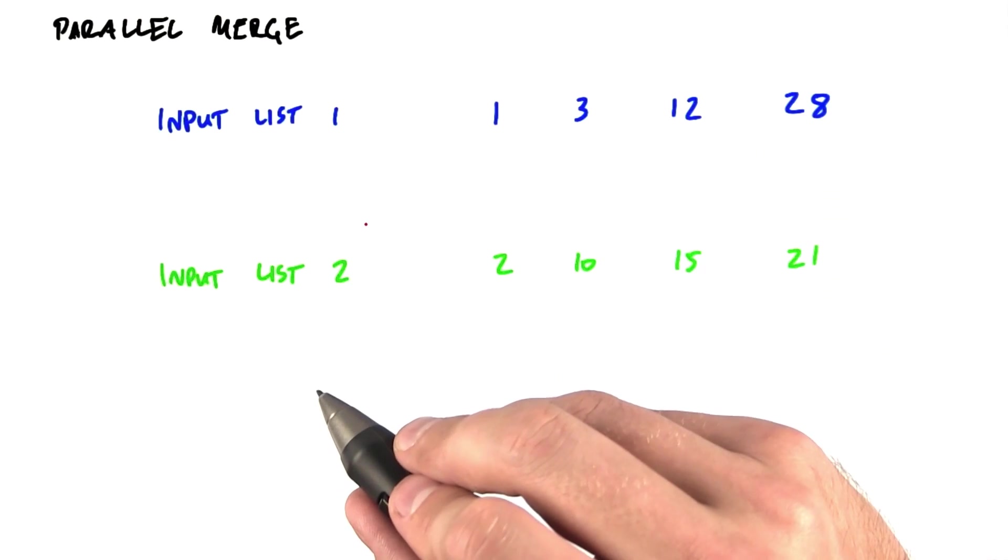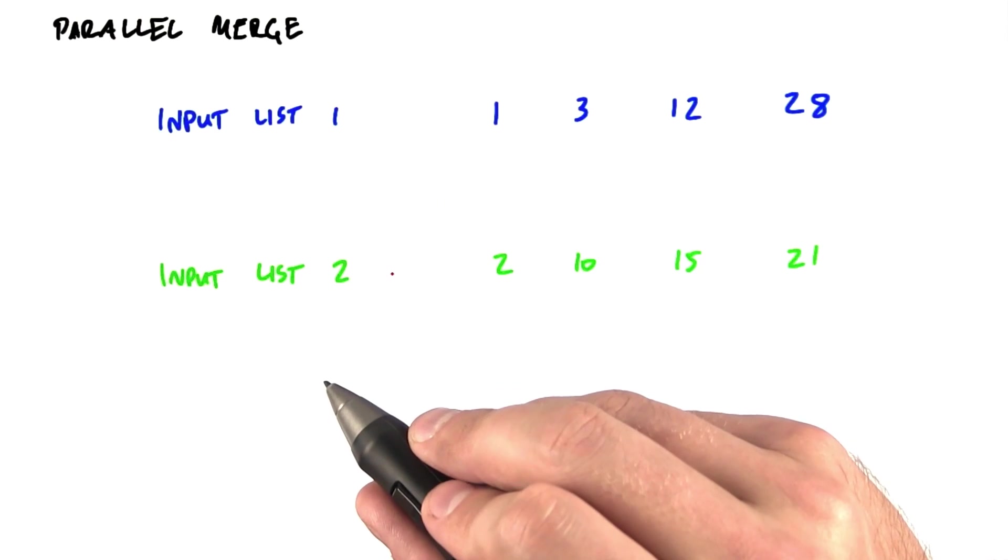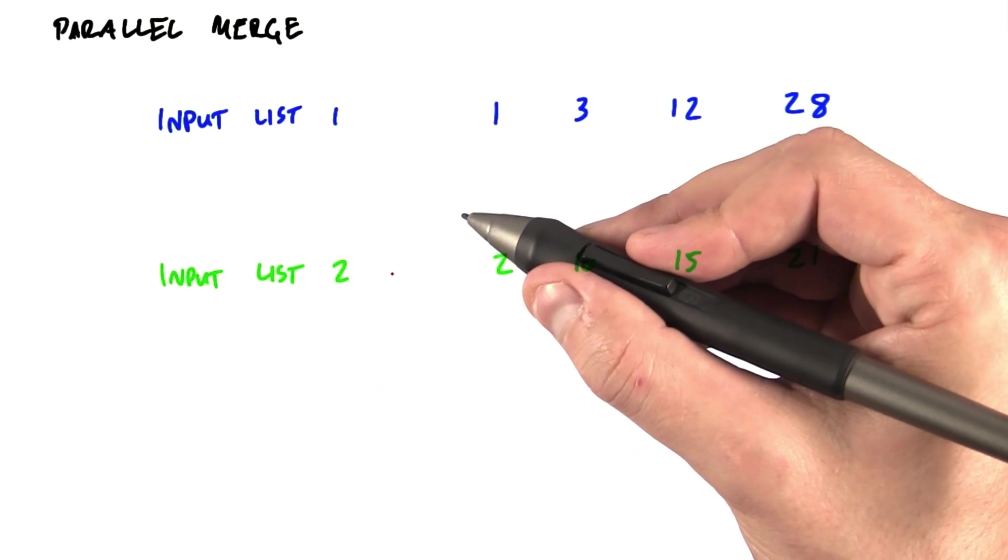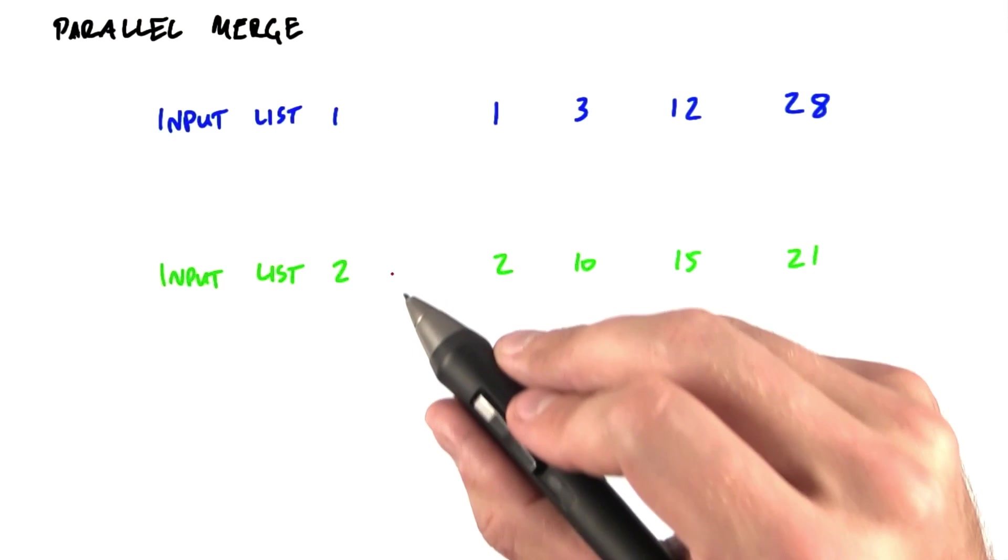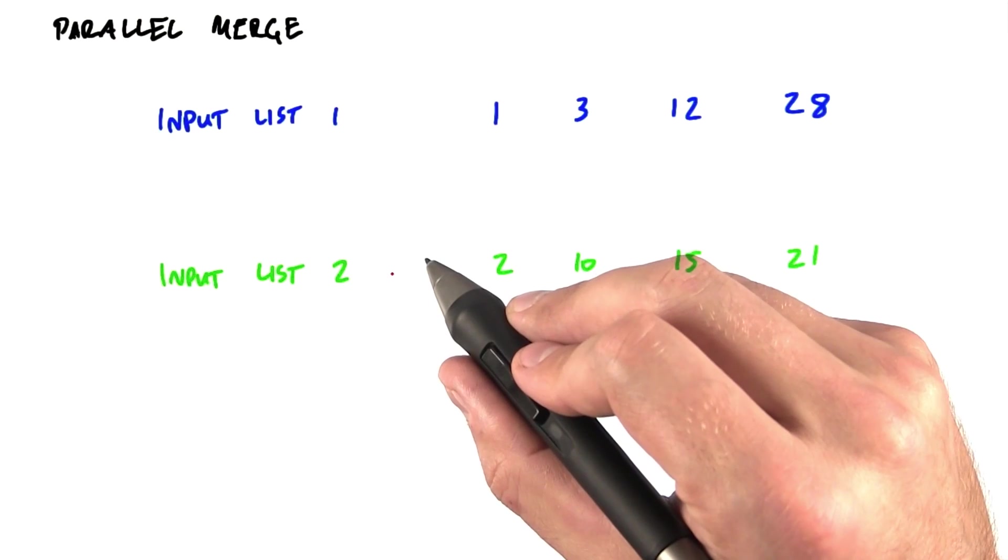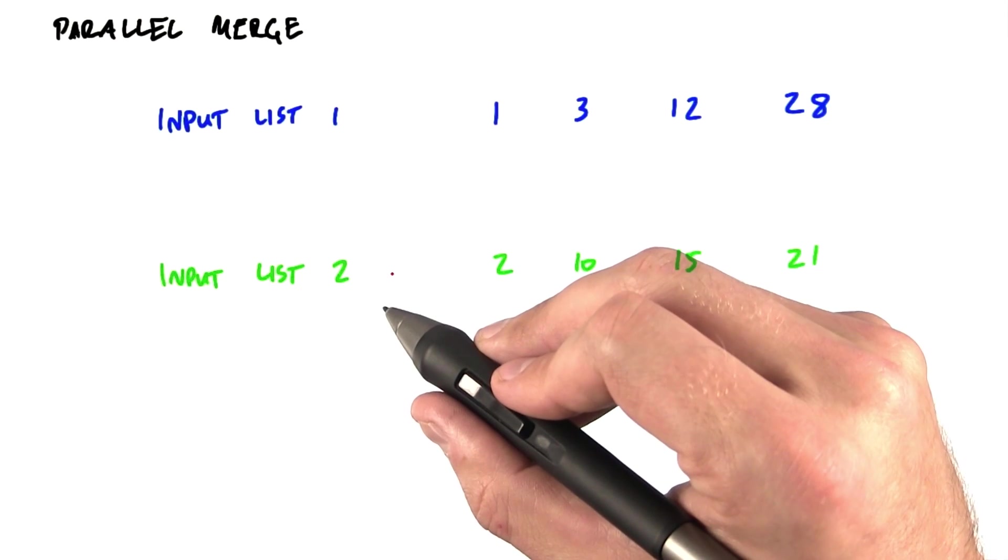each of which would be responsible for one input element. So the goal of each thread is, just like the compact example, to calculate the position of its element in the final list, and then scatter that element there.